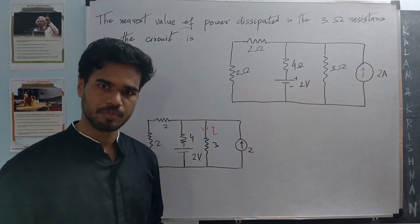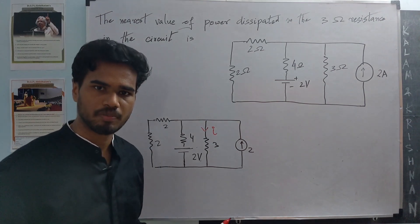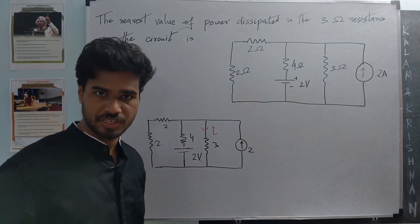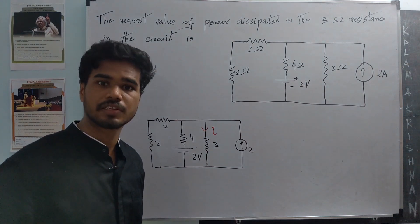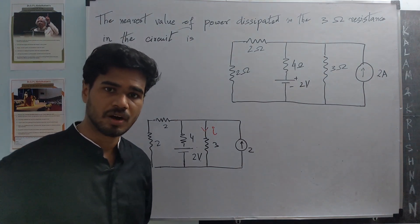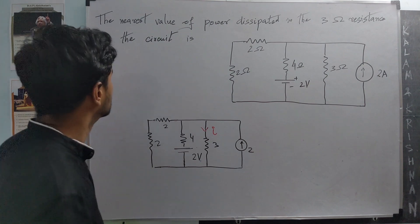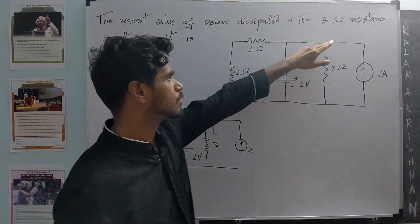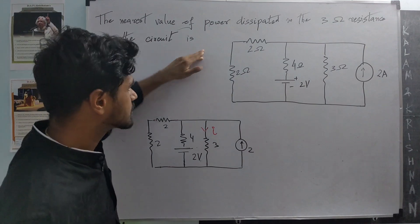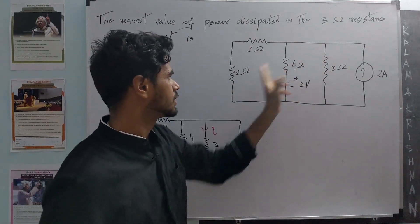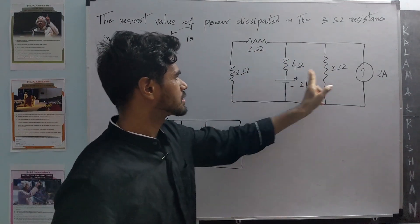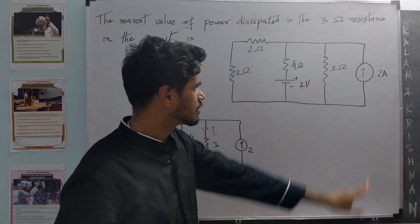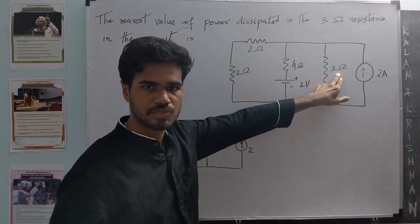In this video I am going to solve a problem related to electrical circuits. I am going to solve it very fast initially, then in the rest of the video I will explain how I solved it. The problem asks for the nearest value of the power dissipated in the 3 ohm resistance. We are given an electrical circuit with a couple of resistors, a voltage source, and a current source.